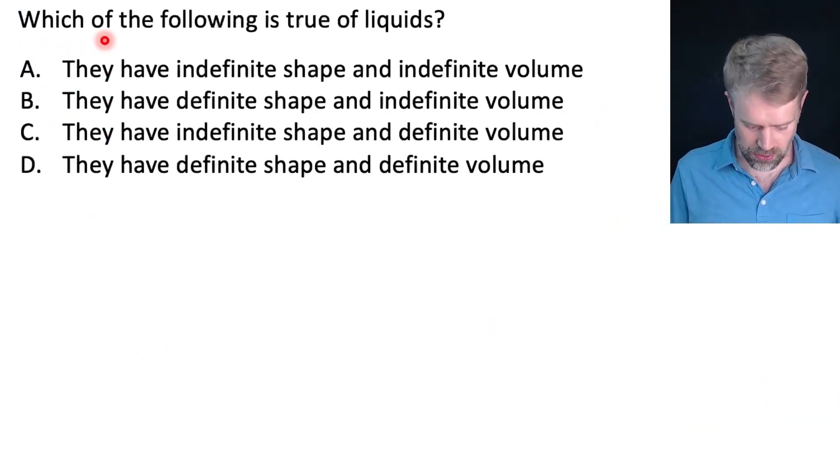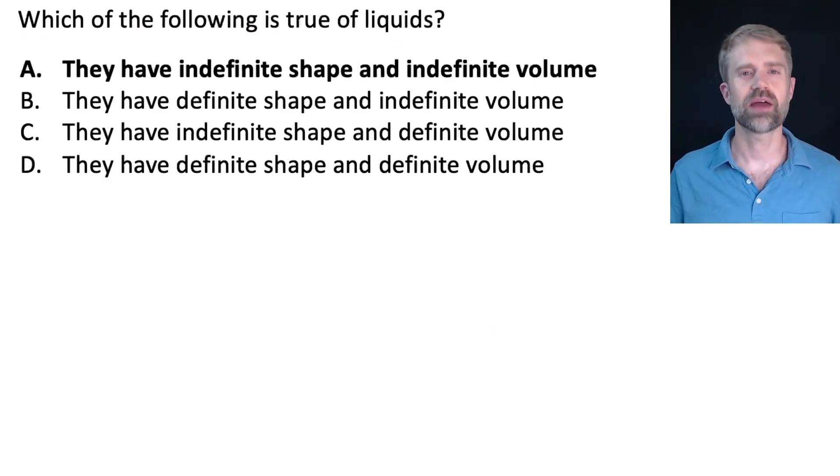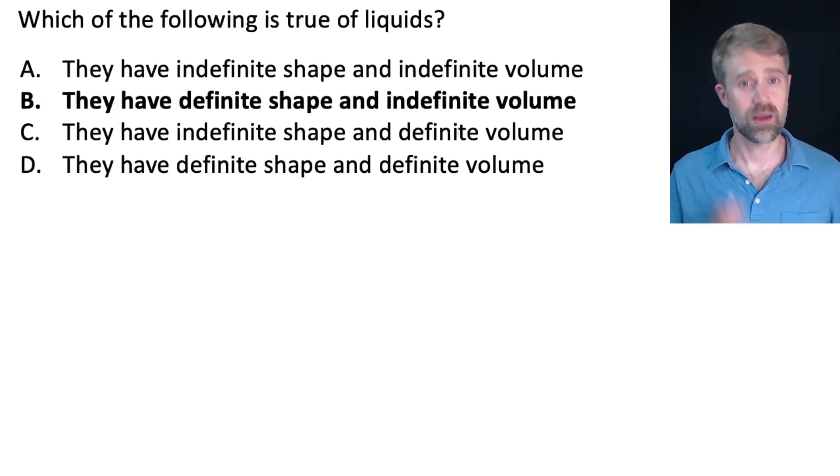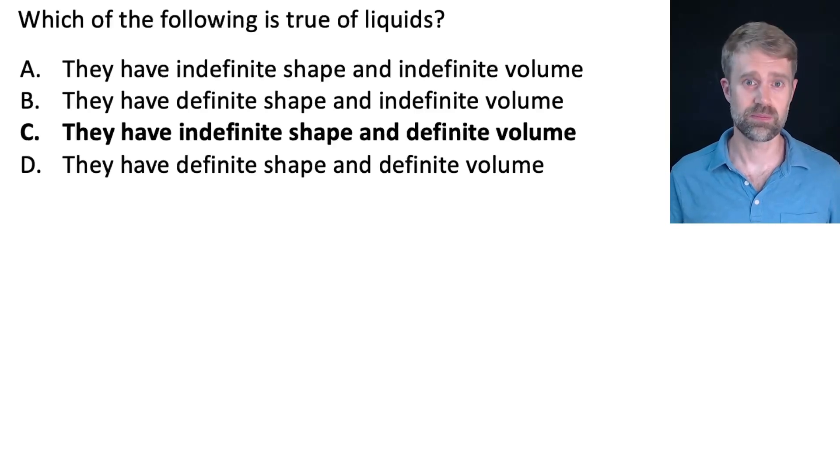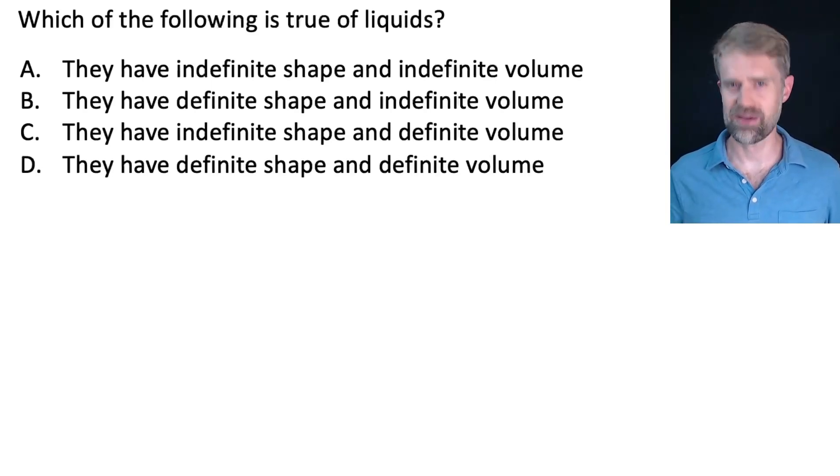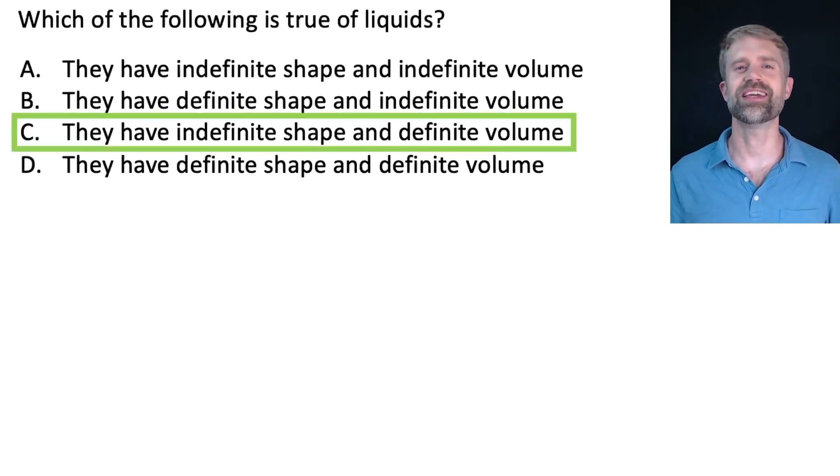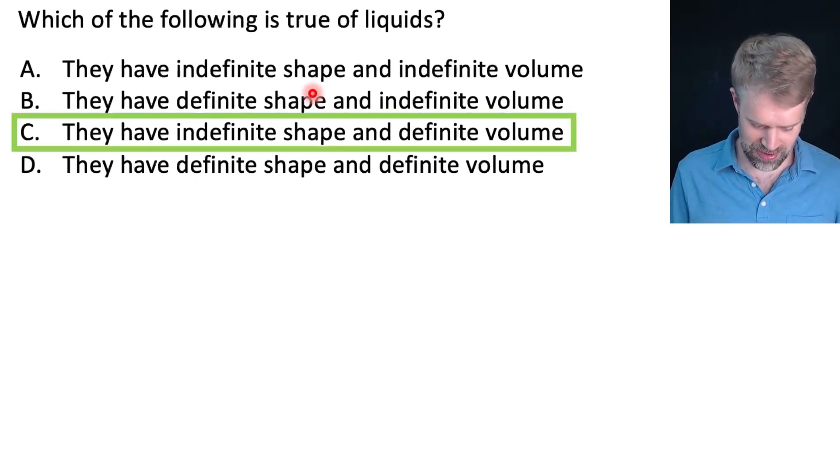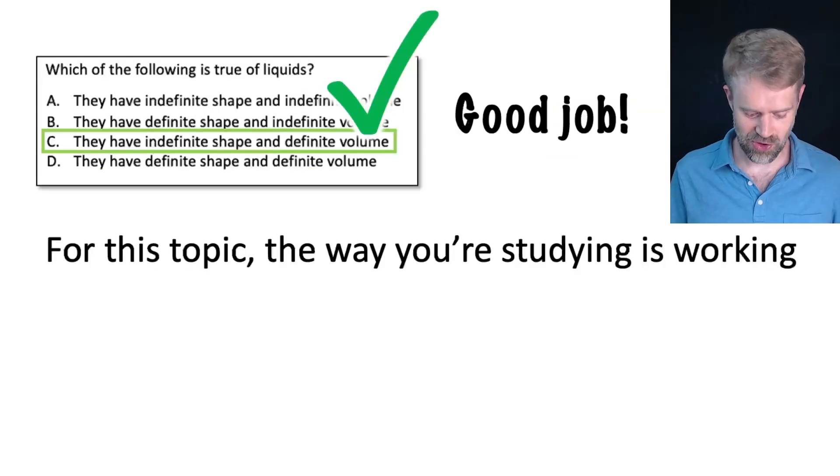Which of the following is true of liquids? A. They have indefinite shape and indefinite volume. B. They have definite shape and indefinite volume. C. They have indefinite shape and definite volume. D. They have definite shape and definite volume. And the answer is C. Indefinite shape and definite volume.